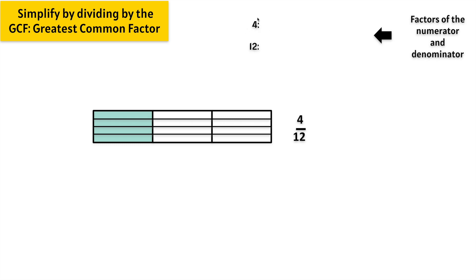Let's think of the factors that multiply to make 4. 1 times 4 equals 4, and 2 times 2 equals 4. Those are the only numbers that multiply to make 4. Now let's find the factors for 12: 1 times 12, 2 times 6, and 3 times 4. We notice that 4 and 12 have 1 in common, 2 in common, and 4 in common.